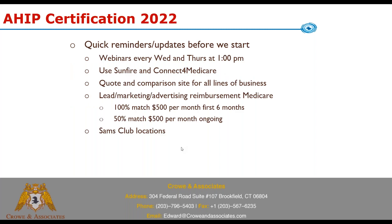A couple quick reminders: we do webinars every Wednesday and Thursday at one. Even this year during AEP, once that starts, we'll probably go to doing them every two weeks because people are busy. If you aren't using Sunfire or Connect for Medicare — Connecture — you should. We offer both systems to agents at no cost.